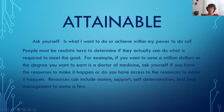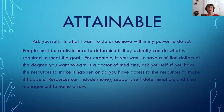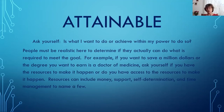Is it attainable? Ask yourself: is what I want to do or achieve within my power to do so? You have to be realistic. Can you actually do what you need to do to attain that goal? For example, if you want to save a million dollars, is that likely to happen in your lifetime with the type of job you want? Or the degree you want to earn — do you want to become a doctor of medicine? Ask yourself what resources you have and how you can make it happen. Resources include money, support, self-determination, time management, and your own abilities.